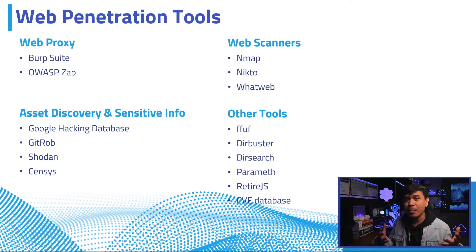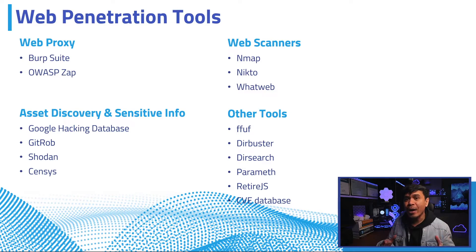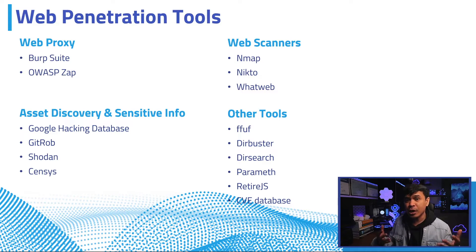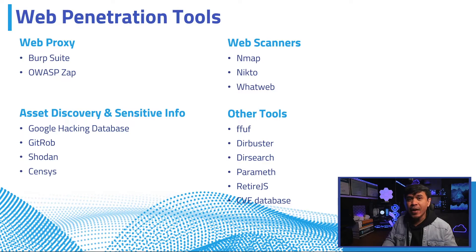The Google Hacking Database contains Google search terms that frequently reveal vulnerabilities. Next, GitHub — this allows you to find potentially sensitive information that has been pushed to GitHub. We also have Shodan and Censys, both security-centric search engines and very common tools used to find services, web and IoT-related information without scanning.